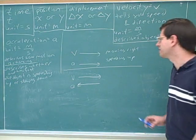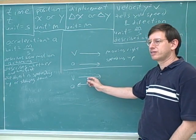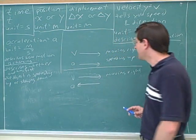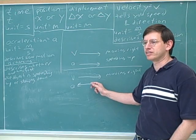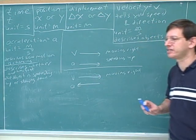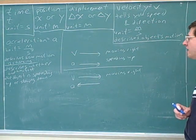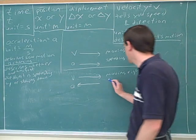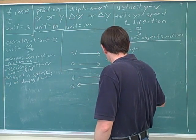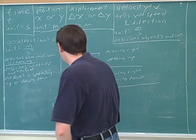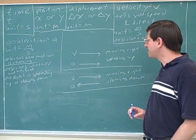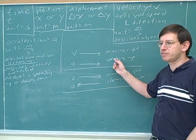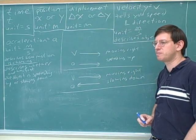Now consider this: the object is still moving to the right based on the velocity arrow, but this acceleration arrow points in the opposite direction — what we call anti-parallel to the velocity. That's a very useful term in physics. Based on intuition, does it seem like this object is speeding up or slowing down? Slowing down. When acceleration is anti-parallel to the velocity, it means the object is slowing down.